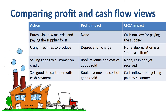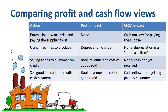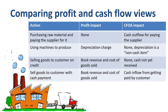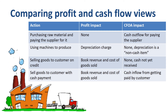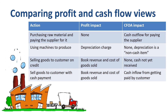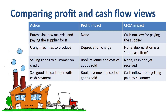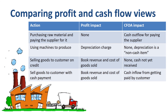Now that you understand the difference between net income and CFOA conceptually, you are able to put together a cash flow statement using the indirect method. You start with the net income and then make adjustments to reconcile the net income to CFOA. For many companies, adding back depreciation and amortization, and adjusting for the changes in working capital items such as accounts receivable, inventory, and accounts payable are the main items in that calculation.